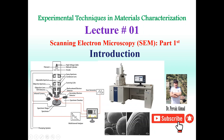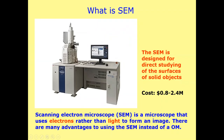Let's start today's lecture from the introduction of the Scanning Electron Microscope. We will start our discussion from the question: what is SEM — that is, what is a Scanning Electron Microscope? The Scanning Electron Microscope is a microscope that uses electrons rather than light to form an image, and there are many advantages to using the SEM instead of an optical microscope.